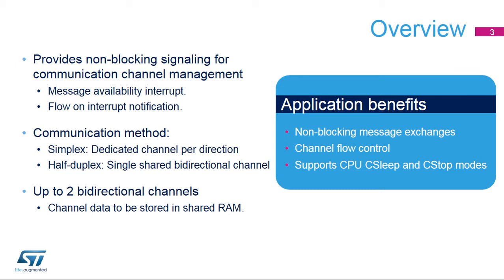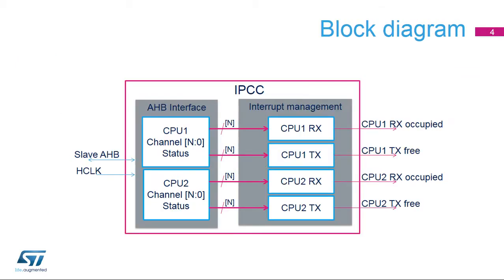The Interprocessor Communication Controller is able to wake up a CPU from C-Sleep, C-Stop, and C-Standby modes. The channel data location is not part of the Interprocessor Communication Controller and is stored in shared memory. The Interprocessor Communication Controller is an AHB slave module. It consists of an AHB interface containing the registers and an interrupt management part.